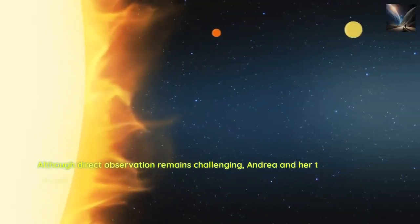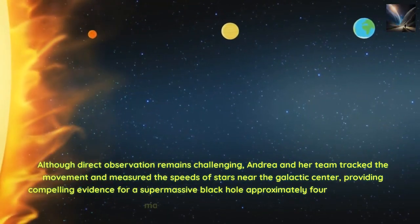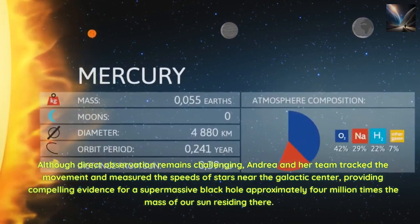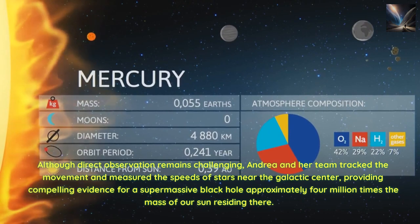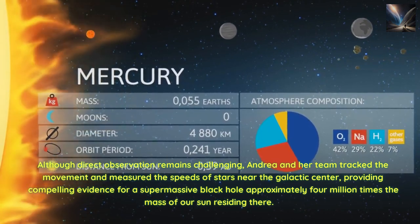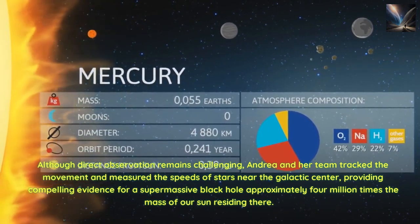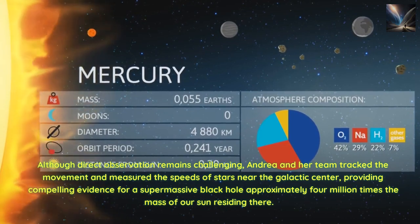Although direct observation remains challenging, Andrea and her team tracked the movement and measured the speeds of stars near the galactic center, providing compelling evidence for a supermassive black hole approximately 4 million times the mass of our sun residing there.